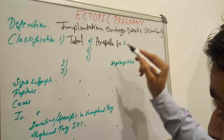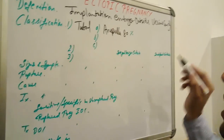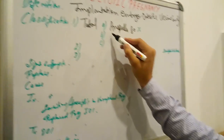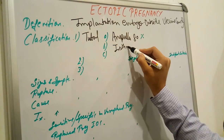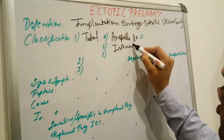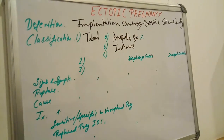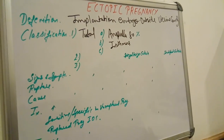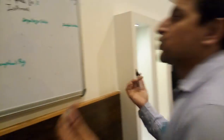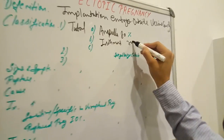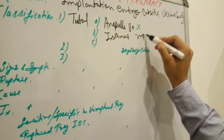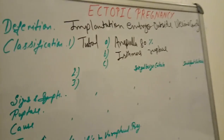The answer is 80 percent. 80 percent of ectopic pregnancies occur in the ampulla. The next tubal site is the isthmus. The most common site for rupture of tubal pregnancy is the isthmus.